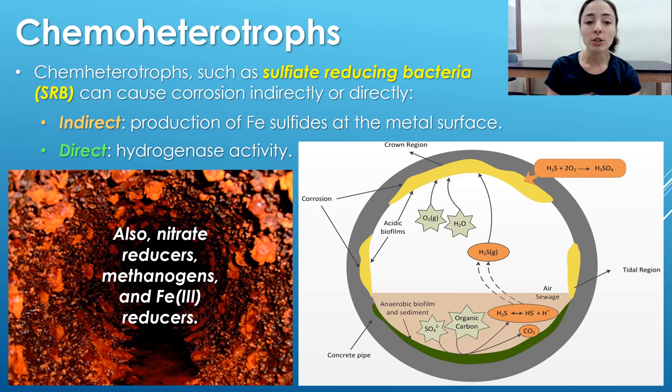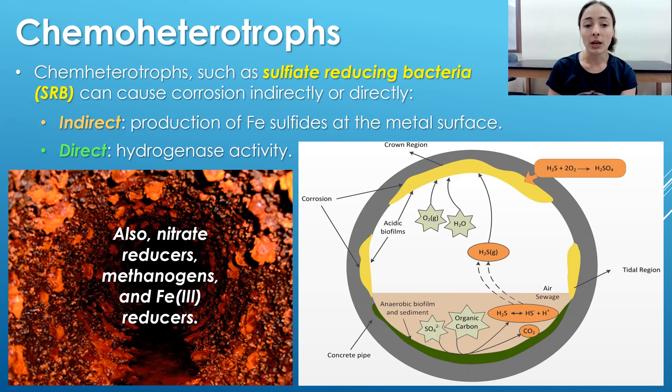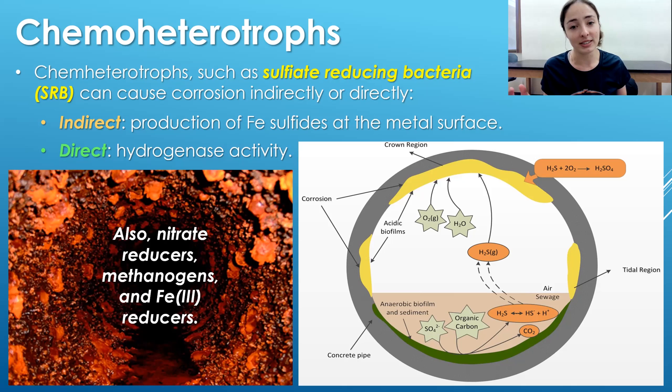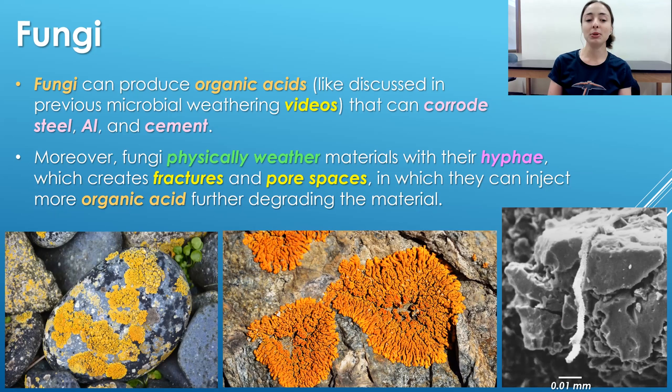Sulfate-reducing bacteria are not the only chemoheterotrophs contributing to corrosion — nitrate reducers, methanogens, and iron-3 reducing bacteria also contribute both indirectly and directly in very similar ways. Many of these bacteria also contain hydrogenase enzymes. Something remarkable about hydrogenase enzymes is that they remain active long after the cell is dead, meaning the cell doesn't even have to be alive to continue corroding the metal — which complicates prevention strategies like simply killing the microbes.